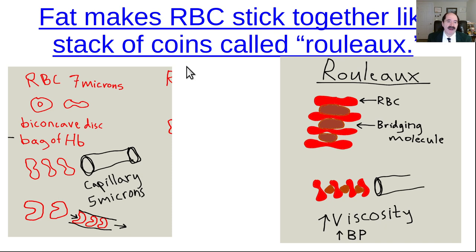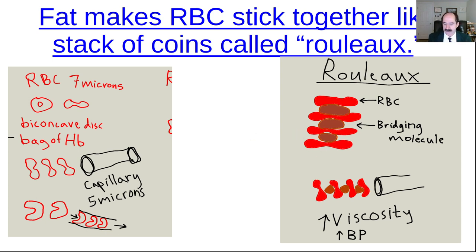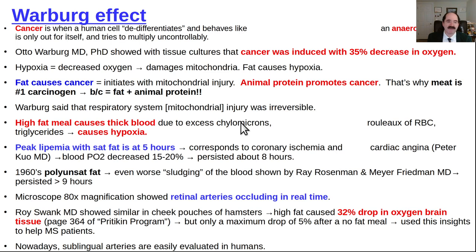How does fat cause hypoxia? Red blood cells are 7 microns in diameter; capillaries are 5 microns in diameter - the cell has to deform to get through. When you eat a high-fat diet, you get thick blood, blood sludge. LDL cholesterol sticks red blood cells together - rouleau formation, like a stack of coins. These stuck-together red blood cells are bulky, harder to deform to get through capillaries. Blood pressure goes up. Delivery of oxygen to tissues is delayed. In diabetics, capillary basement membrane thickening also decreases oxygen delivered to the tissues.